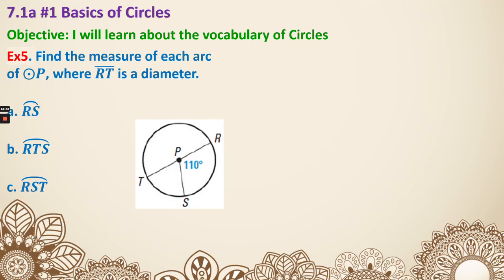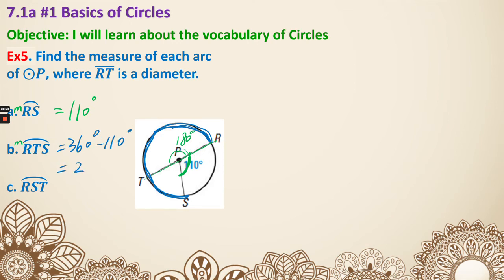Now let's look at some examples. Find the measure of each arc of circle P, where RT is a diameter. Since RT is a diameter, we already know that part is 180 degrees. First, arc RS - the central angle is 110 degrees, so the measure of arc RS is 110 degrees. Next, arc RTS - that's the major arc, which is 360 minus 110, giving 250 degrees. Next, arc RST - since RT is a diameter, that is a semicircle, so it's 180 degrees. That's example five.